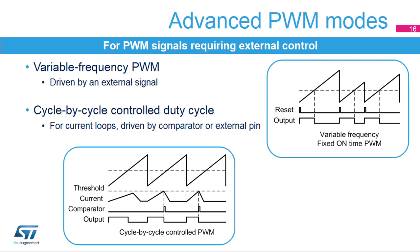Another mode for the timer is to have the duty cycle controlled by hardware, with either an on-chip comparator or an off-chip signal. The PWM operates at a fixed frequency, the maximum duty cycle set by the compare register, and the actual value controlled cycle by cycle. This is used for applications requiring current-controlled PWMs, typically for driving DC motors or solenoids.